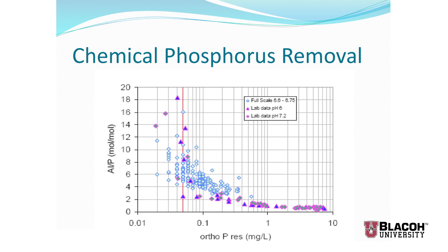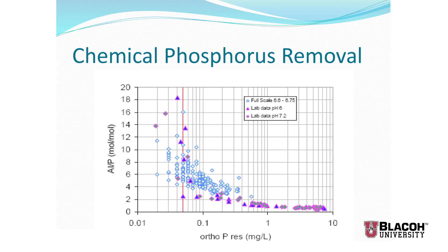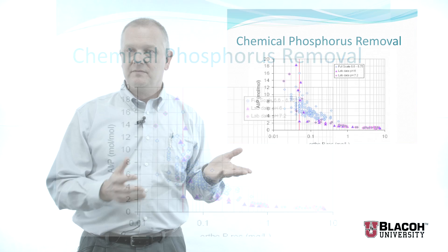If you need to remove more phosphorus — say down to 0.05 mg/L residual, which is a limit some plants in the United States must achieve — that's the red line on the graph. To reliably reach that level, you may have to add as much as 16 times as much aluminum as there is phosphorus. This can produce a large amount of solids settling in your clarifier or being filtered out. Combined with the metal hydroxides from reacting with hardness, solids removal becomes a big part of a chemical phosphorus removal system.